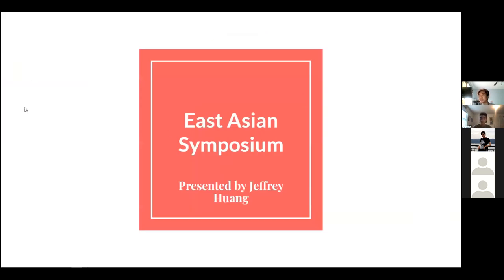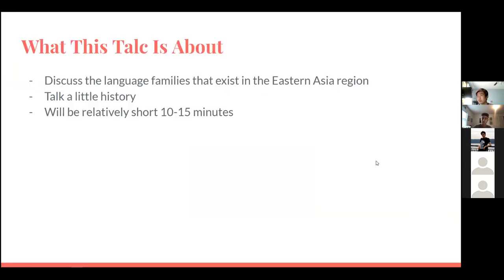This is going to be an East Asian symposium on East Asian languages. What is this talk going to be about? It's going to discuss the language families that exist in the Eastern Asian region — a little history, how these languages relate to each other, and some basic information about them. This talk will be relatively short, around 10 to 15 minutes, as we're just covering general information. Each one of these language families has enough material for its own presentation and many more.